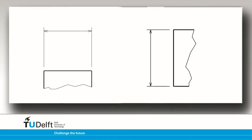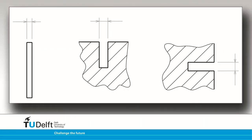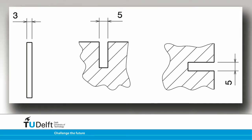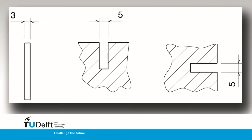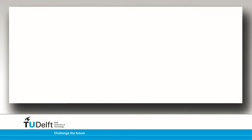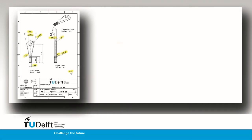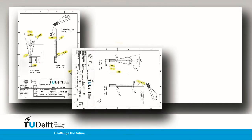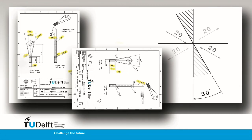Dimensions should be placed centrally above the dimension line. For small dimensions, arrows may be placed outside the projection lines. The numeral can be placed at either side of the projection lines if insufficient space is available for central placement. Dimensions should be placed so that they can be read from either the bottom or the right-hand side of the drawing. For that reason, in the example shown, please avoid placing dimensions in the hatched area.